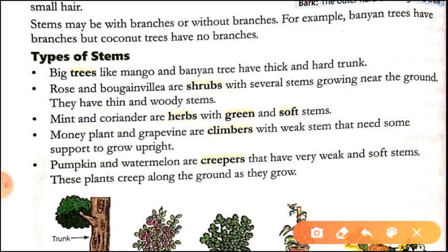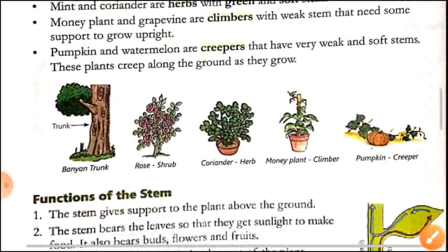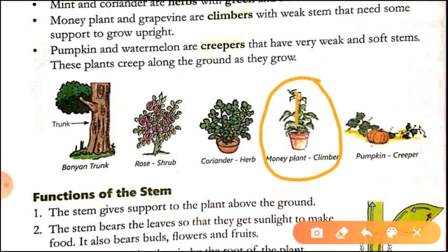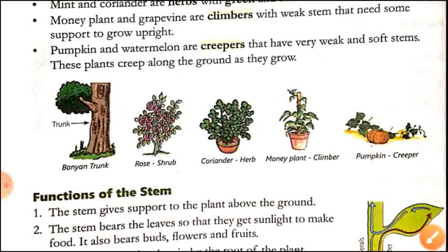Next, money plant and grapevine are climbers with weak stems that need some support to grow upright. Climbers are plants with weak stems that need some support to grow upright. They cannot grow upright on their own. You can see here this plant is a climber — a support has been placed so that this plant can grow.